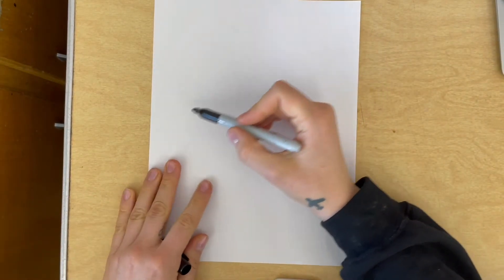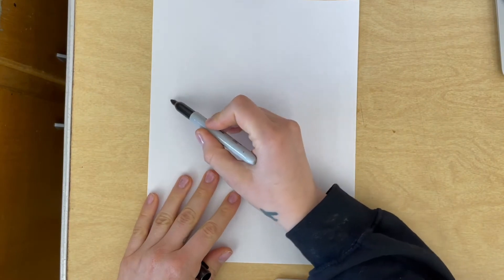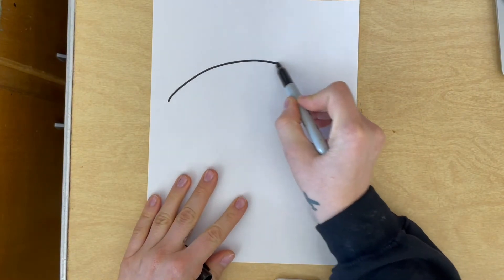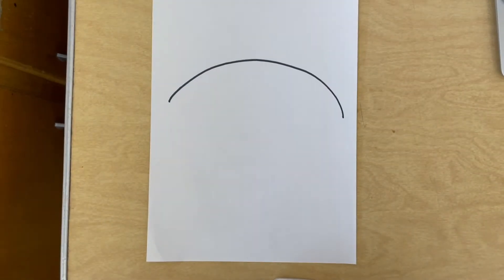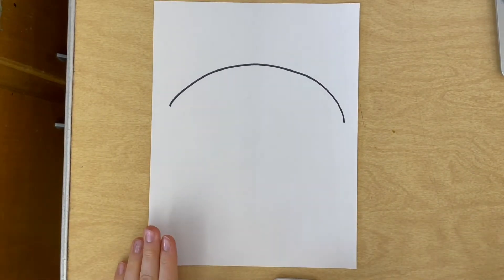Hello artists and happy Earth Day! We are going to draw and do something fun and different. So this is the first line, a really big long rainbow in the middle of your paper.